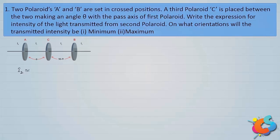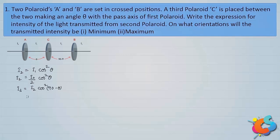I2 is the intensity of the emergent light coming from C. By Malus's law, I2 = I1 · cos²θ. Now I1 = I₀/2, so I2 = (I₀/2) · cos²θ. For I3, using Malus's law again: I3 = I2 · cos²(90° − θ), since the angle between B and C is 90 minus theta. Substituting I2, we get I3 = (I₀/2) · cos²θ · cos²(90° − θ).